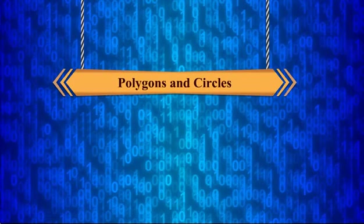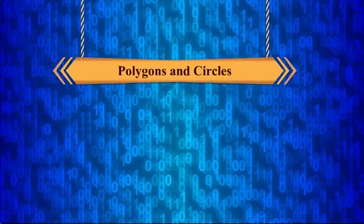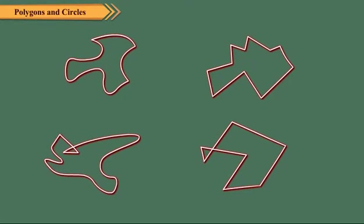Polygons and circles. Observe these curves. Do you find anything special in these curves? We see that all the curves are closed curves. It means in all the cases, the starting and the end points are same.